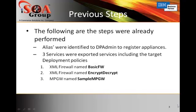Previously we set up a few things prior to the demo. The first thing we did was we created aliases so that DP Admin can identify the system that we are targeting. And then we exported three services using DP Admin. There were two XML firewalls, Basic Firewall and Encrypt-Decrypt, and then one multi-protocol gateway called Sample-MPGW.